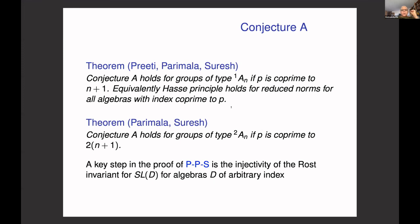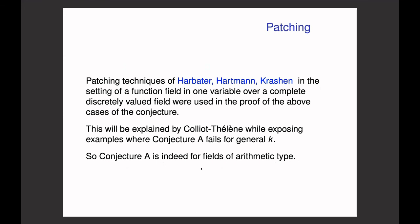What brought about the solution in the cases A_n (inner and outer type) were new patching techniques, which have been very well used in work concerning linear algebraic groups over function fields of curves over complete discrete valued fields. These techniques were developed by Harbater, Hartmann, and Krashen in the setting of function fields in one variable over complete discrete valued fields, and this is the key technique used in the proof of the last two remaining cases. More detail on this will be given in Colliot-Thélène's talk tomorrow.